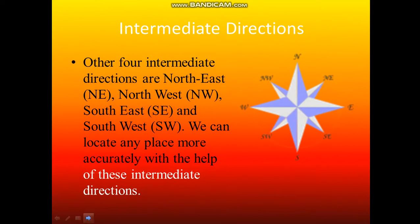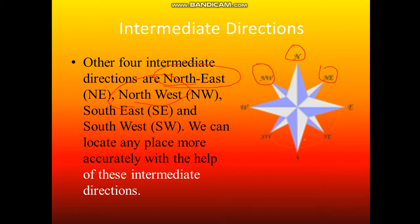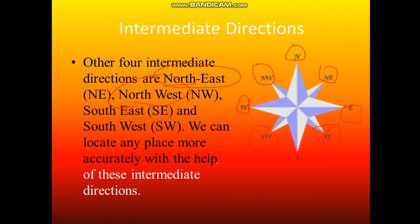Now we will see what the intermediate directions are. Intermediate directions are the directions between the cardinal points — North-East, North-West, South-East and South-West. If it is in between North and West it is North-West, in between North and East we have North-East, in between South and West we have South-West, and in between East and South we have South-East. With the help of intermediate directions we can locate any place more accurately.